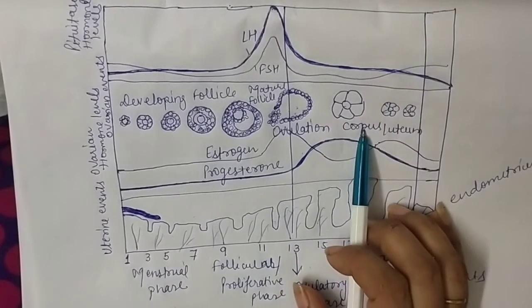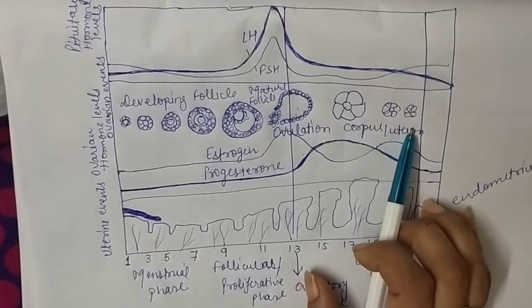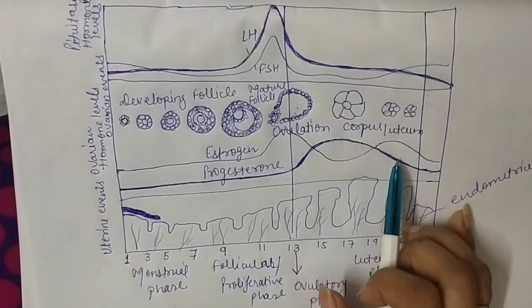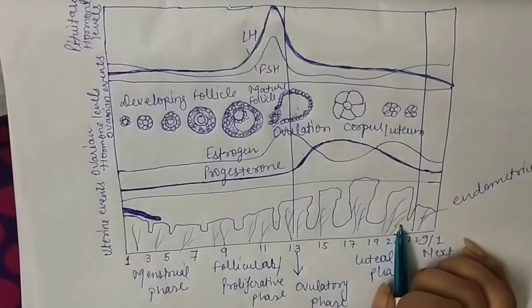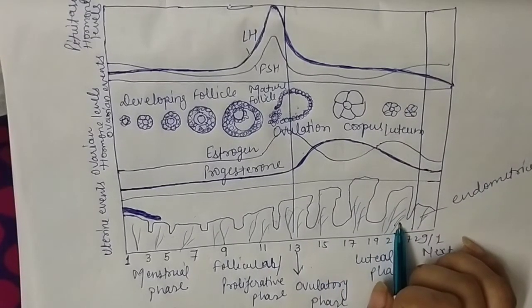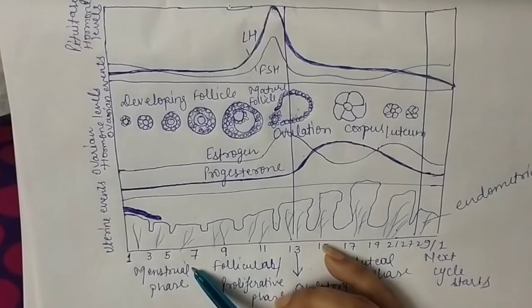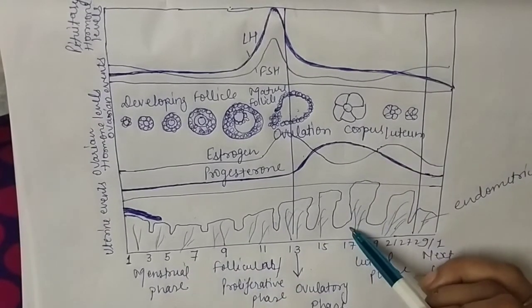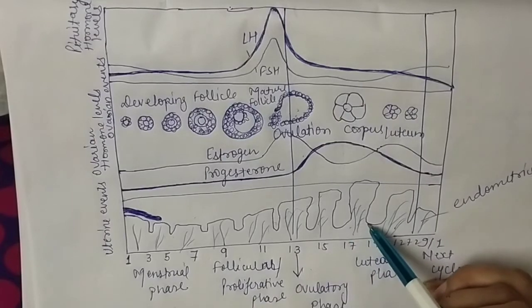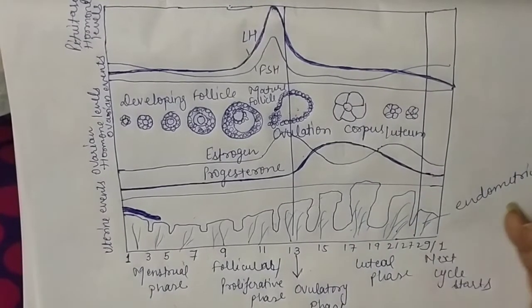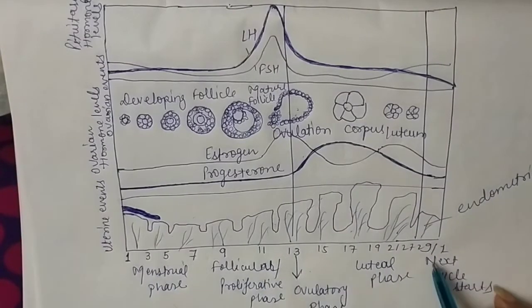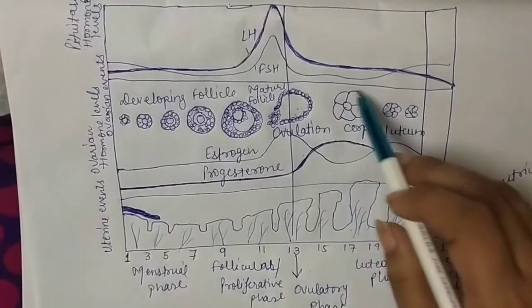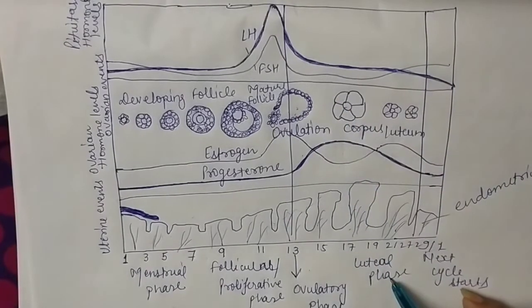If sperm is not available, the corpus luteum will degenerate. Estrogen level will increase, endometrium lining will start breaking down, and which phase will start again? The ova wasn't utilized, endometrium lining wasn't utilized, blood vessels weren't utilized, so everything ruptures and bleeding occurs again, meaning the same cycle repeats after 29 days.